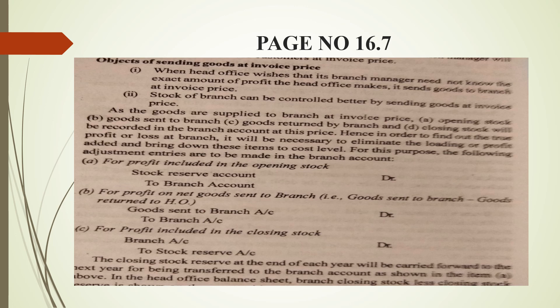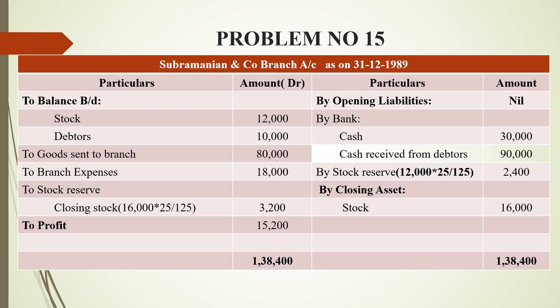The content mentions only loading, but in this problem we also need to exclude the closing debtors. In the previous approach, we included goods loading and stock reserve, but we must exclude the closing debtors. The reason is that the goods are not in either the head office nor the branch — they are in transit. The amount is yet to enter the business; it is still outside. So we must use the invoice price to find the exact value of profit, and we will get the answer shown in the book.